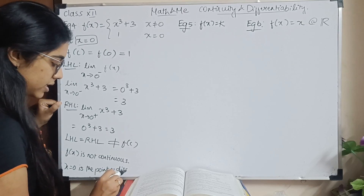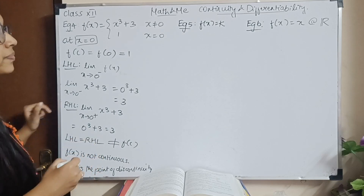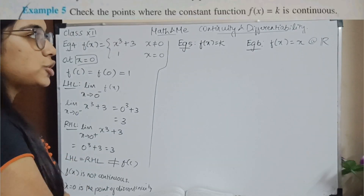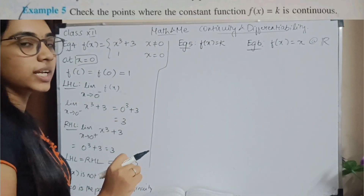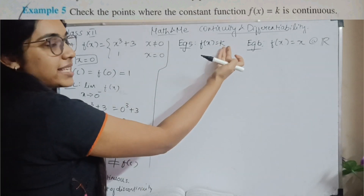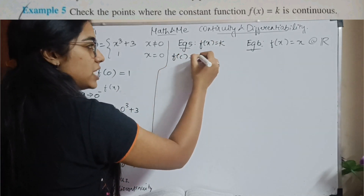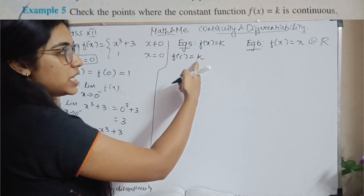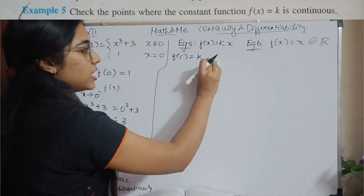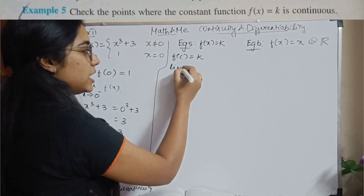Example 5: Find at which points the function f(x) = k (a constant) is continuous. The function is not dependent on x. So f(c) is simply k for any value of c — you can put any c and it will equal k.